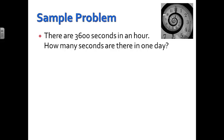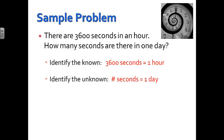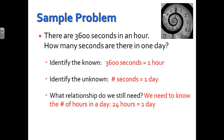There are 3,600 seconds in an hour. How many seconds are there in one day? So this is our problem. First thing we do is identify the known. We know that there's 3,600 seconds in an hour. We also know that the unknown is how many seconds are there in one day. So we don't know the number of seconds in a day. What relationship do we still need? Well, we need to know the number of hours in a day. That's common knowledge. It wasn't written in the problem, but most people at your age know that there are 24 hours in one day.